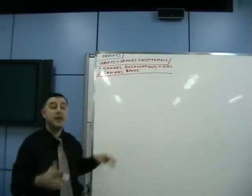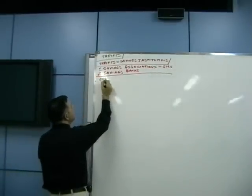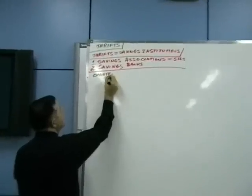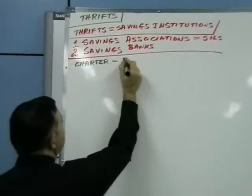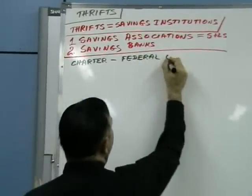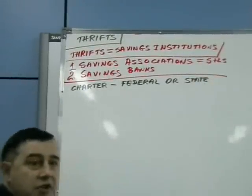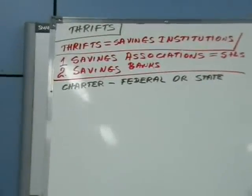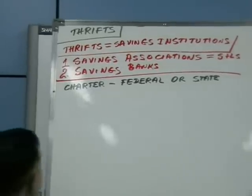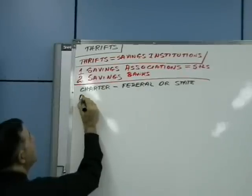So let's focus on thrifts and make distinctions along the way. The first key characteristic is charter, and the charter can be federal or it could be state. Some prefer to be federally chartered, others prefer to be state chartered. This is not as important for what we're doing.